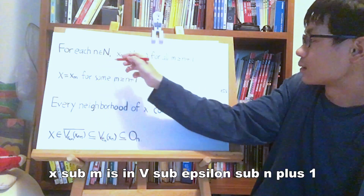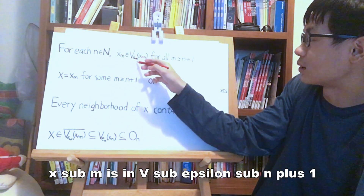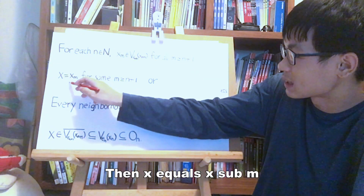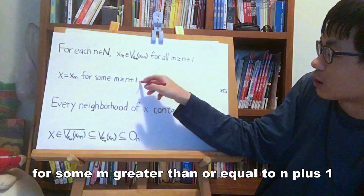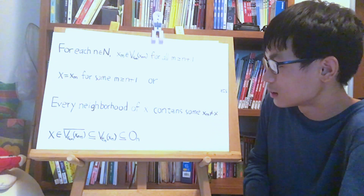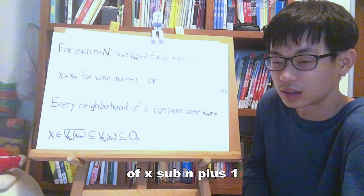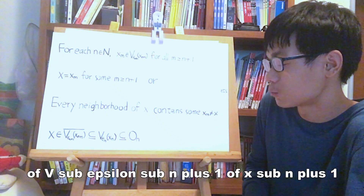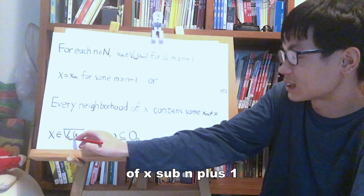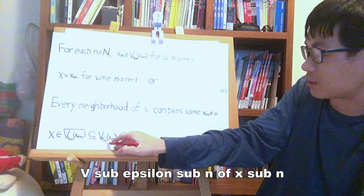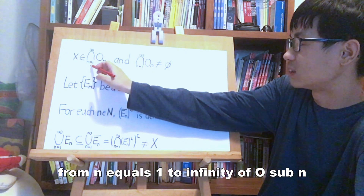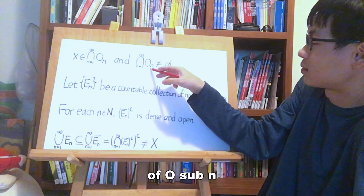For each n in the natural numbers, x_m is in V_epsilon_{n+1}(x_{n+1}) for all m greater than or equal to n+1. Then x equals x_m for some m greater than or equal to n+1, or every neighborhood of x contains some x_m not equal to x. This means x is in V_epsilon_{n+1}(x_{n+1}) or x is a limit point of V_epsilon_{n+1}(x_{n+1}). Thus x is in the closure of V_epsilon_{n+1}(x_{n+1}), which is contained in V_epsilon_n(x_n), which is contained in O_n. Hence x is in the intersection from n equals 1 to infinity of O_n, and that intersection is not empty.